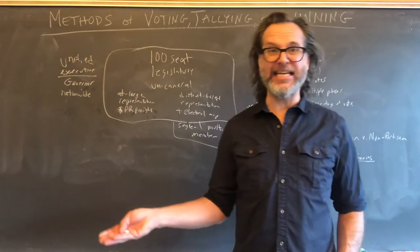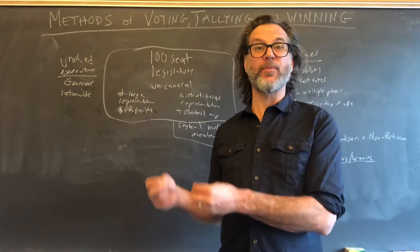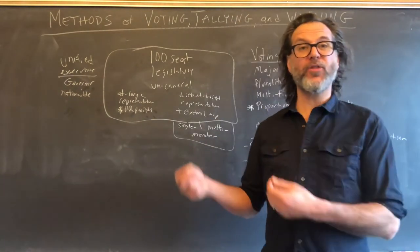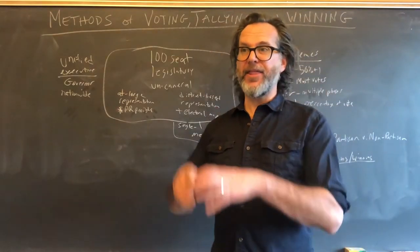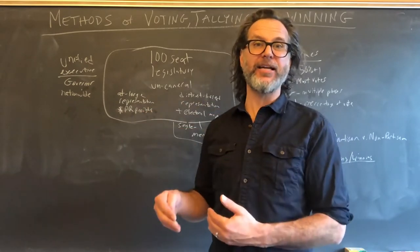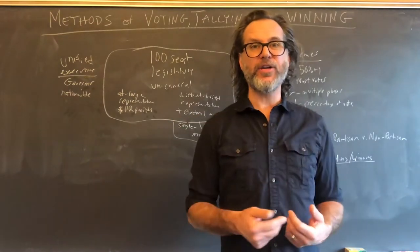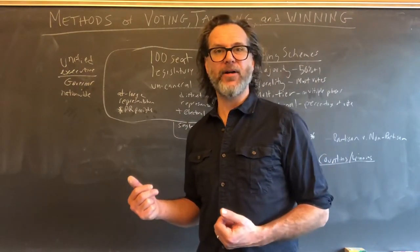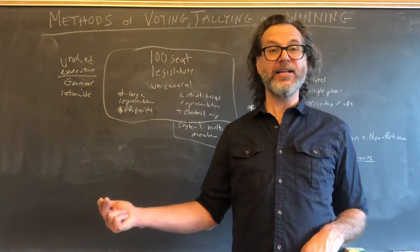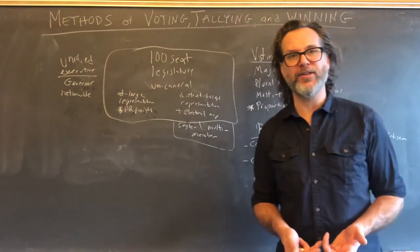Let's say candidate D came in fourth. All of the people who voted for candidate D as number one — their second preference is now added to the total for all the rest of the candidates and then totaled up. At the end of that round, the person in last place is dropped and their votes are redistributed from their second preference. If the second preference is somebody who's already been dropped — candidate D — then their third preference gets redistributed. That's one way to do an instant runoff, and it's the most common way.